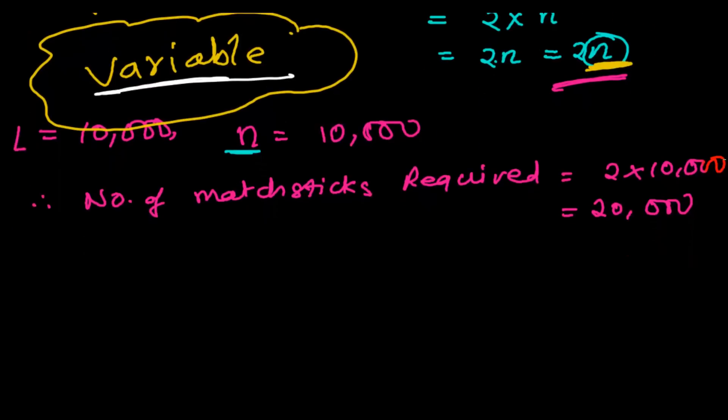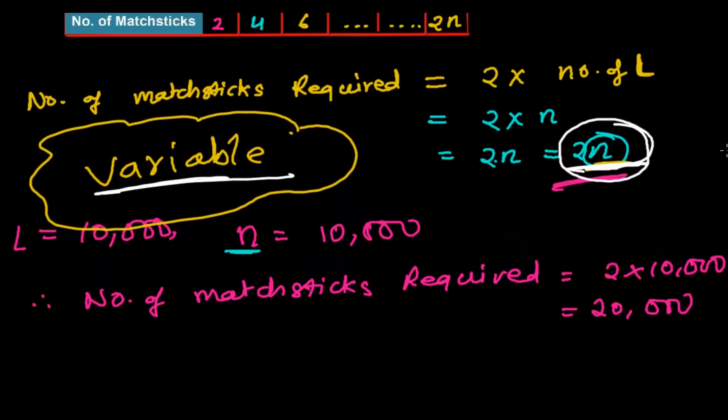And the expression that we make, like 2N, this is called an algebraic expression. It's a kind of rule or system that gives you the number of matchsticks. Sometimes it can give you any kind of result - the number of workers working in an office, the amount of salary you can get, or the total profit. Any kind of relationship you can form with algebra. Algebra makes your life very, very easy. In practical life, algebra can help you a lot.